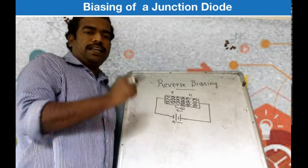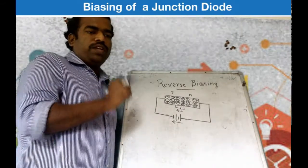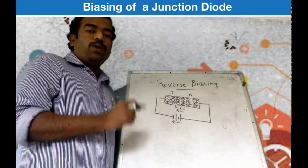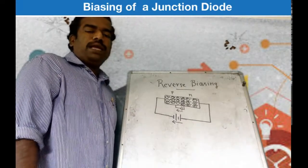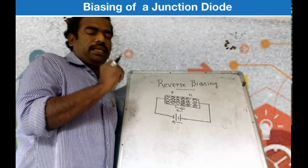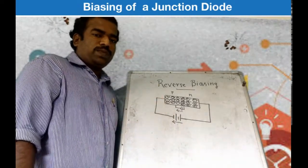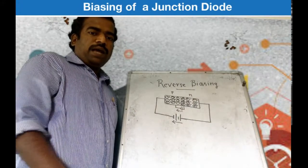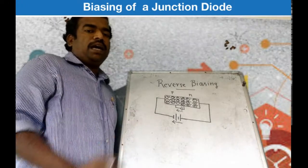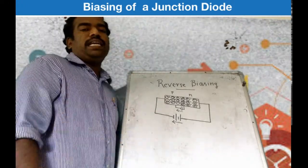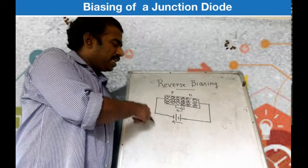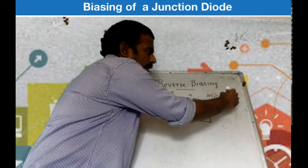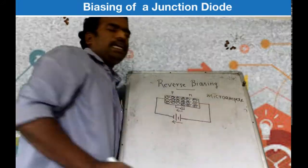Which means, in actual practice, under reverse biasing conditions, a small current which is very feeble flows through the diode from the N side to the P side. This is called minority current, and it is of the order of microamperes. That current is very feeble and it is temperature dependent.